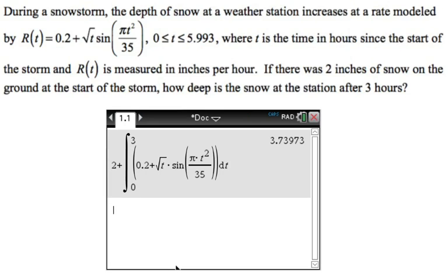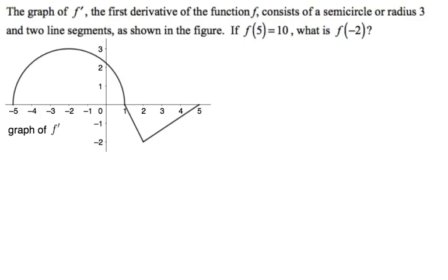So let's do one more example. So this will be a non-calculator FRQ type. So we have the graph of f prime, the first derivative of the function f, consists of a semicircle, that should say of, typo, of radius three, and two line segments as shown in the figure. If f of five is 10, and we want to know what, okay, so if f of five is 10, what is f of negative two?